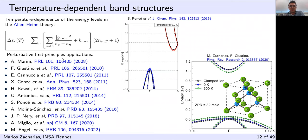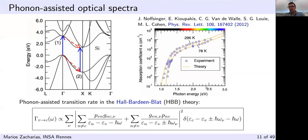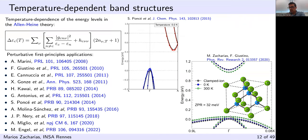The Allen-Heine theory accounts for temperature-dependent energy levels. Its second-order expression contains the Fan self-energy term with standard electron-phonon matrix elements and electronic energies, and the Debye-Waller term which depends on second-order variations of the self-consistent potential with respect to nuclear coordinates. n is the Bose-Einstein occupation factor at temperature T. This expression is used to evaluate temperature-dependent band structures. At zero kelvin, nuclei still vibrate due to zero-point motion, causing band gap renormalization — the valence band goes higher and the conduction band lower in energy.